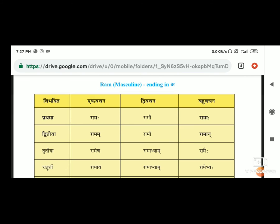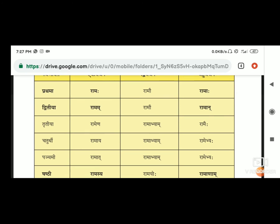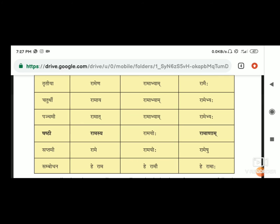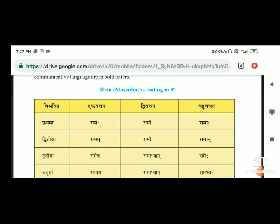Second है द्वीवचन, जो कि दो लोगों के लिए बात की गई हो. रामो - राम का हो जाएगा रामो. रामम का भी रामो ही रहेगा. रामेण का हो जाएगा रामाब्यम. रामाय का भी होगा रामाब्यम, और रामात का भी होगा रामाब्यम. रामस्य का होगा रामयोहो. रामे का होगा रामयोहो. हे राम का होगा हे रामो.